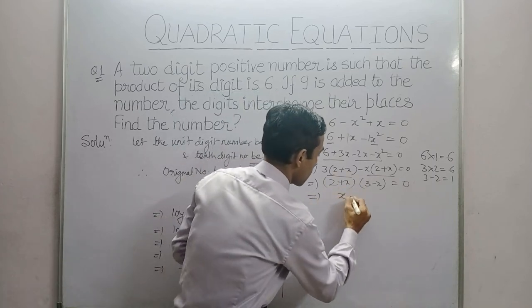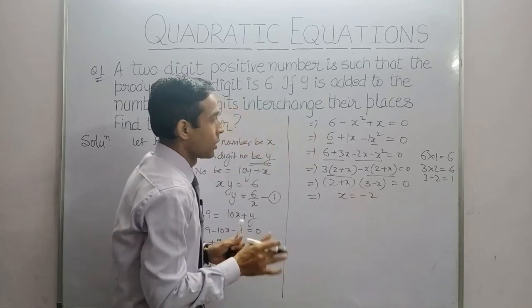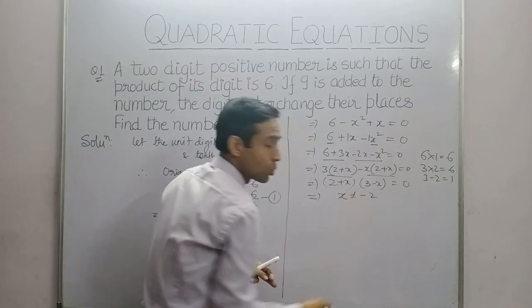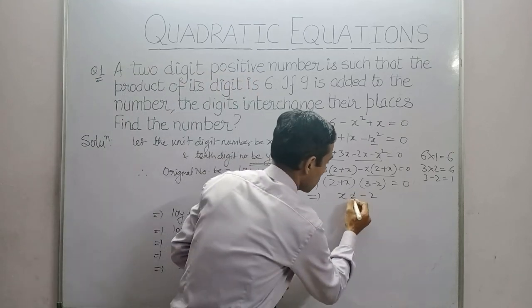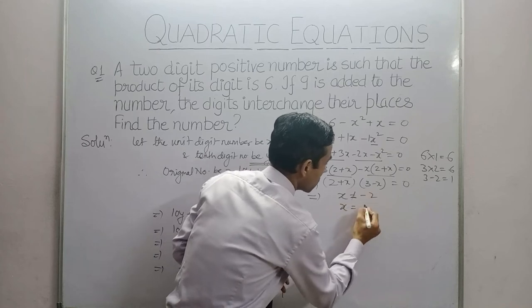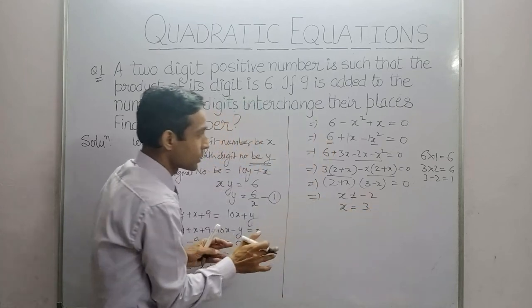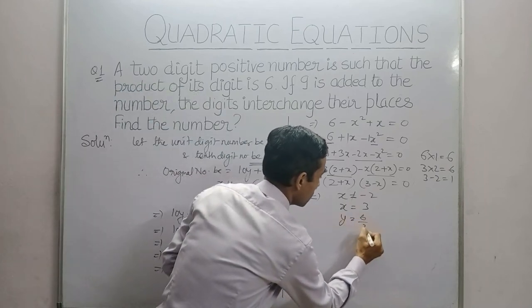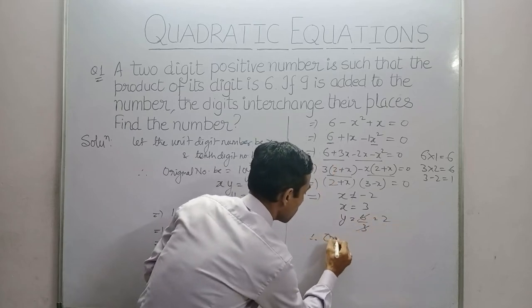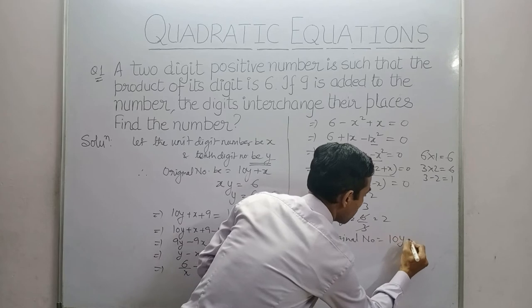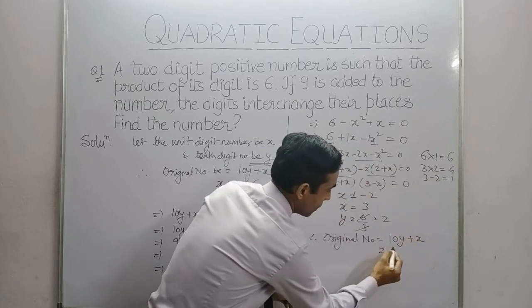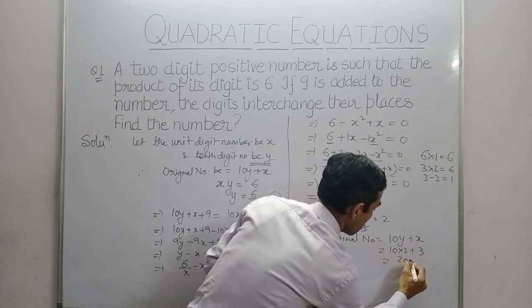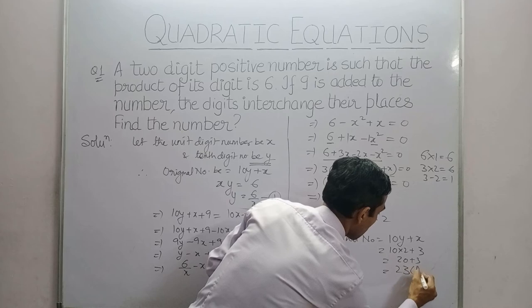x is equal to -2. Now, the two-digit number is positive, so -2 will not be the case. So I will discard it. Second value is x is equal to 3. So here this is the unit digit number. Now, we will put this value in equation number 1. So we will get y = 6/3 = 2. Therefore, original number = 10y + x = 10(2) + 3 = 23 is our answer.